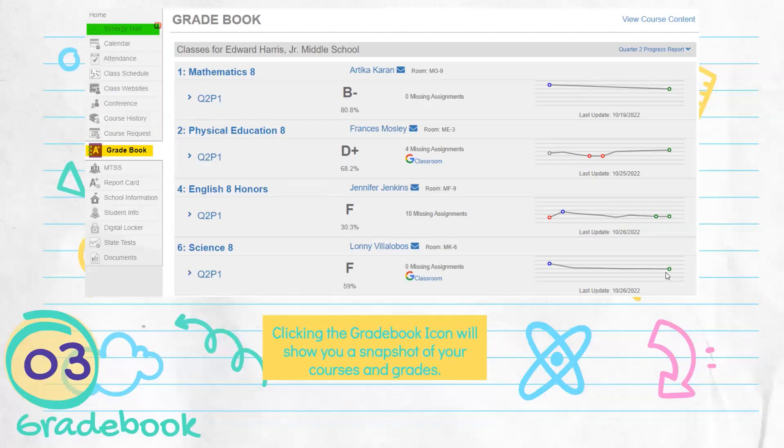So here's a larger snapshot of the grade book. Now, if you just start right here, you have a lot of information on the page. You have all of your classes, the grades that you have in each class. So this student has a B minus, D plus, F, and F.